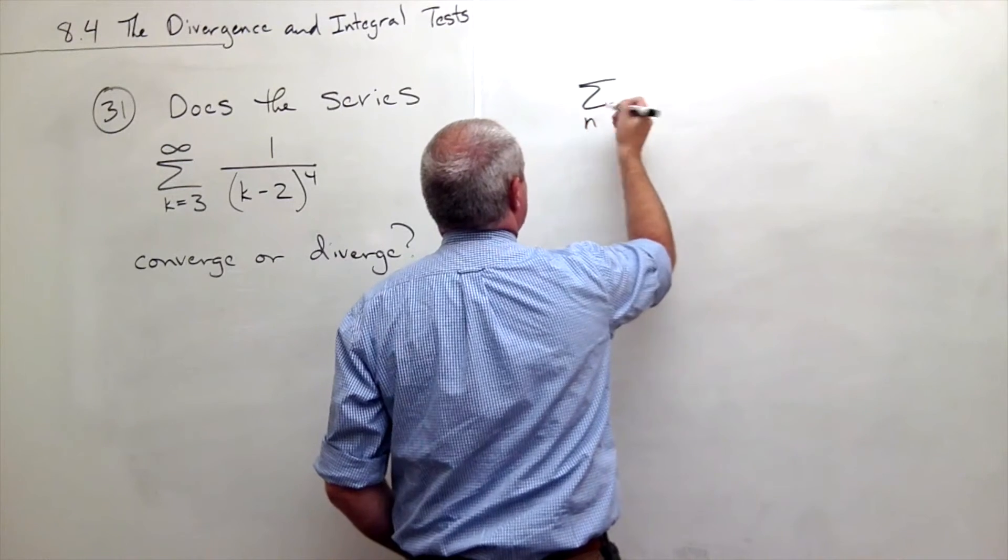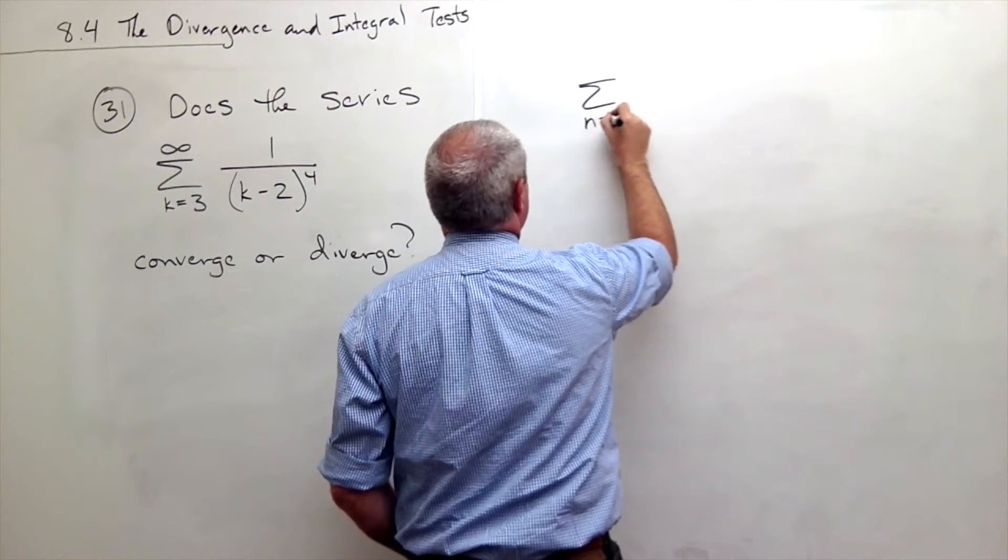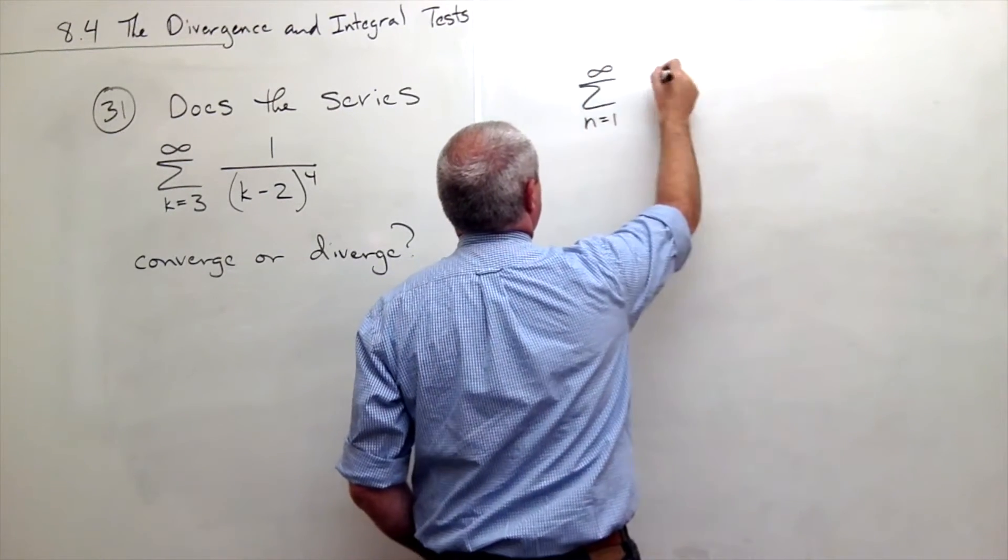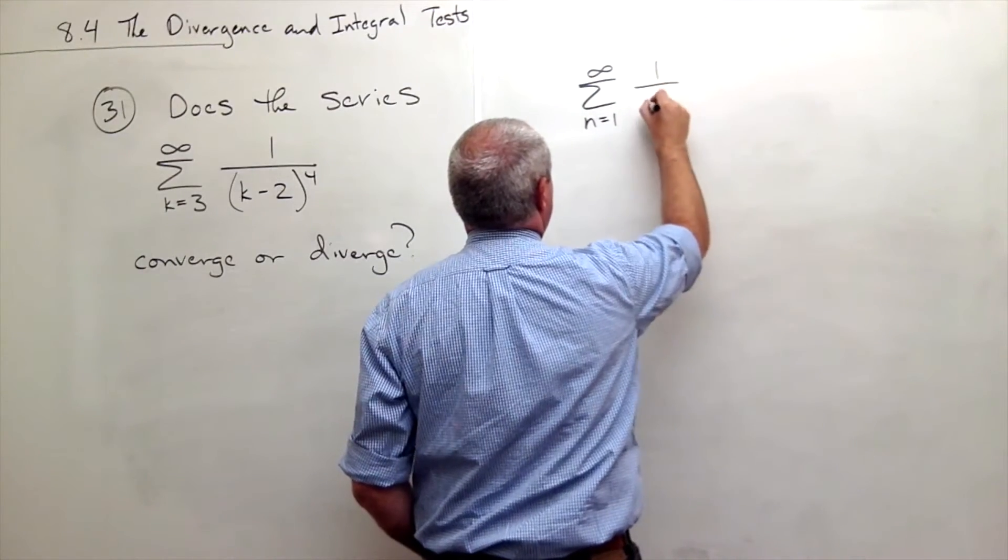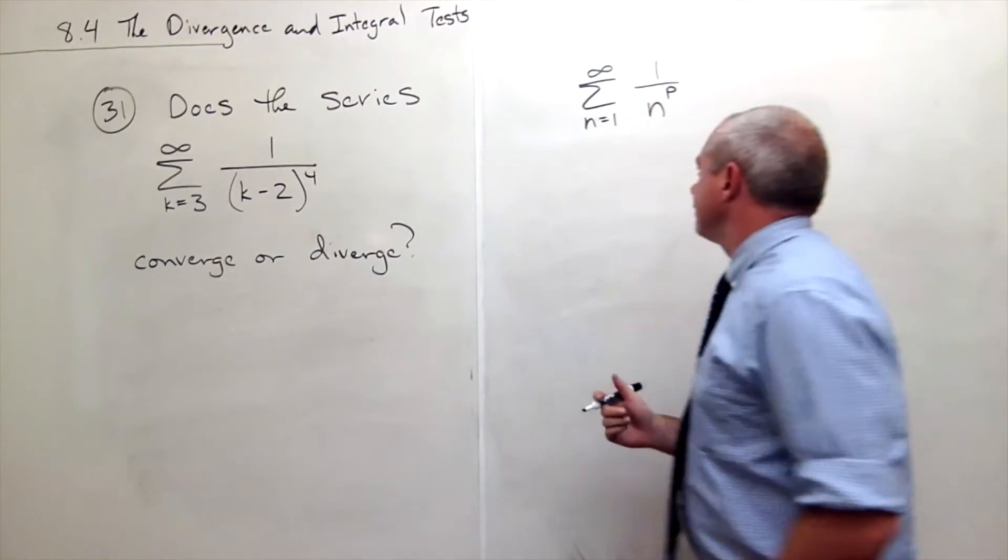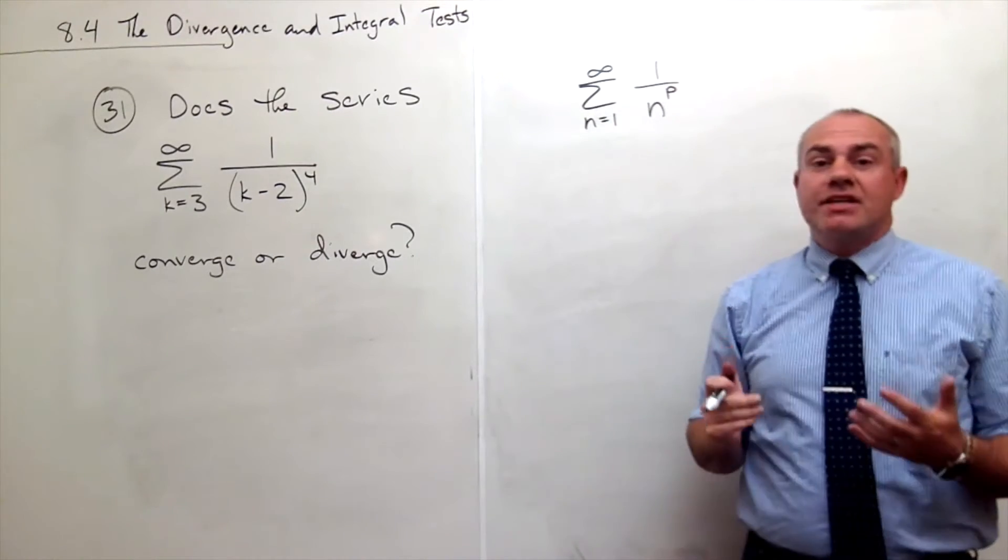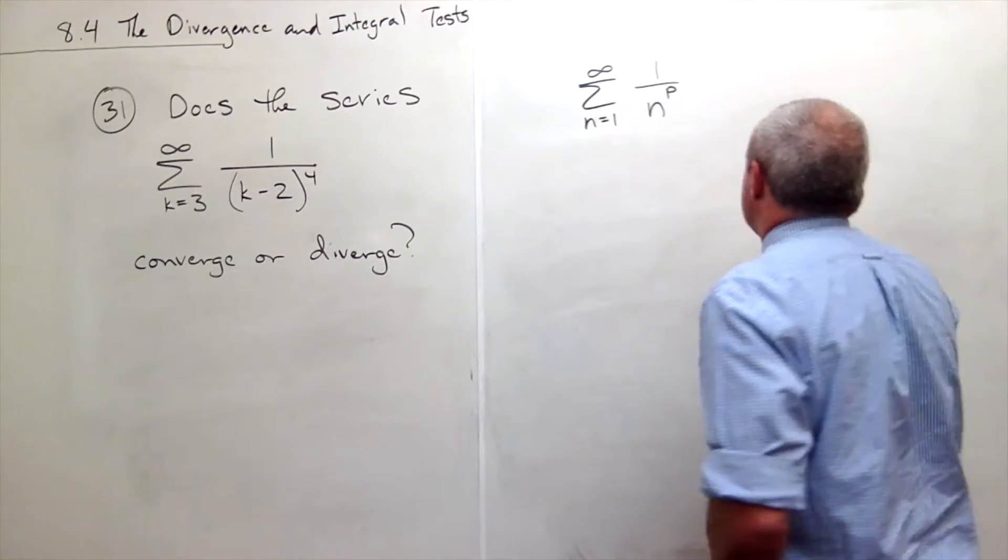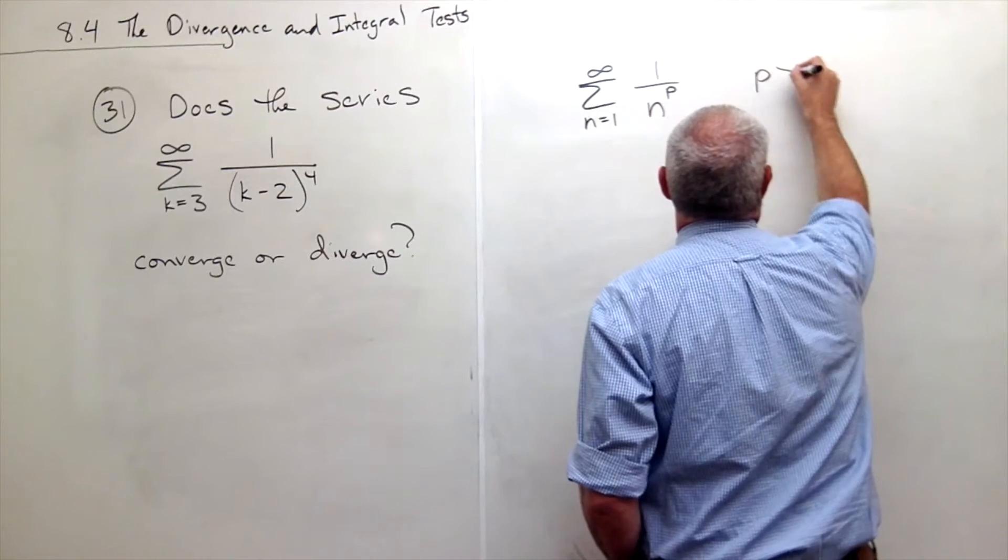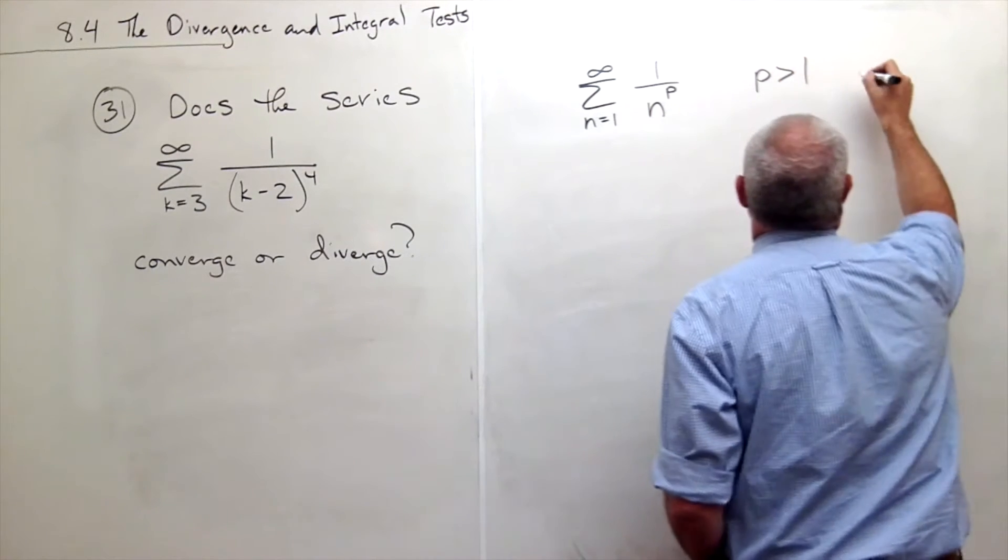Sum maybe n going from 1 to infinity of 1 over n to the p-power. Now, what we know about p-series is if p is bigger than 1, this thing will converge.